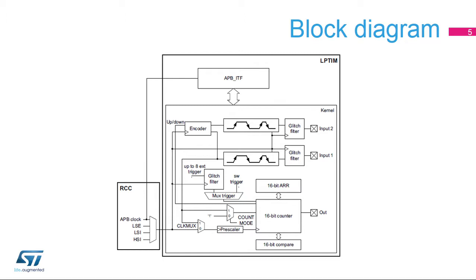The low-power timer is a peripheral with two clock domains. The APB clock domain contains the peripheral's APB interface. The kernel clock domain contains the low-power timer peripheral's core functions. The kernel clock domain can be clocked by the APB clock source or by other internal clock sources, including the LSE, LSI, and HSI sources. Also, the kernel clock domain can be clocked from an external clock source through the timer's input-1 input.